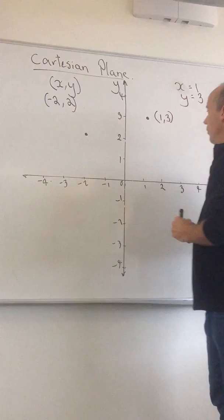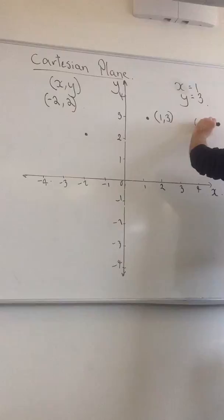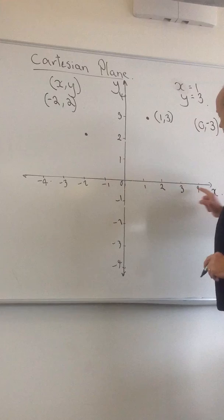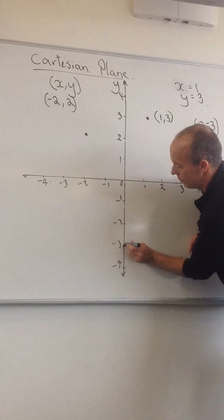Let's try 0 and minus 3. So x is equal to 0 on my x axis here. I go down to y equals minus 3 and this will be this point here. So they are called the Cartesian points.